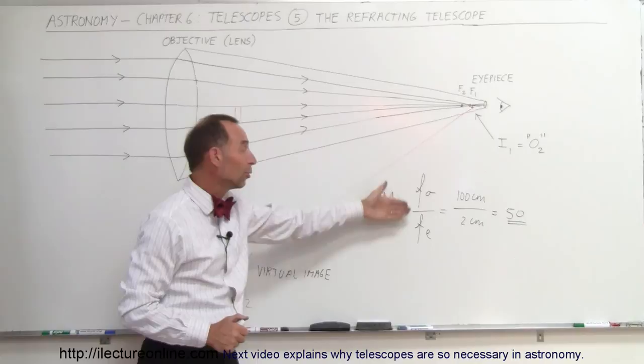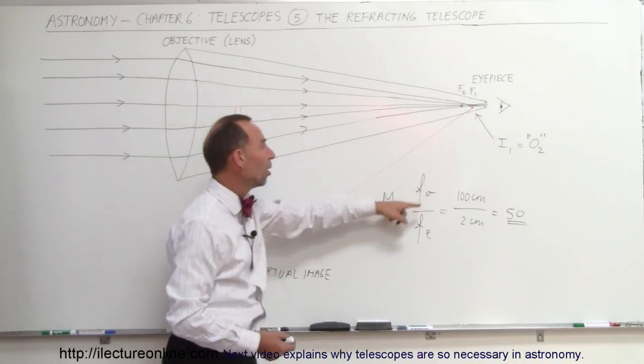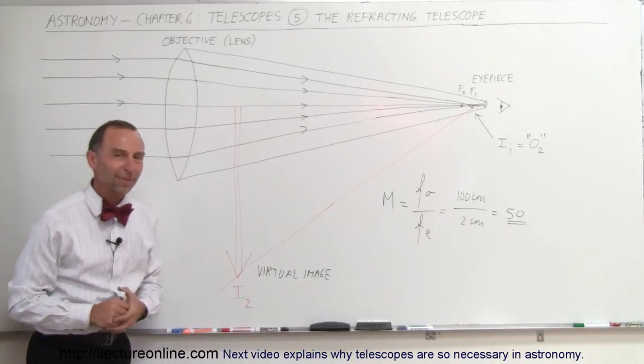And the magnification is simply the ratio of the focal lengths of the large objective lens and the small eyepiece, and usually those are pretty big numbers. That's how we see that.